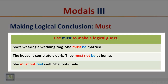'She must not feel well — she looks pale.' The modal auxiliary in these examples is used to make a logical guess. In the first example, we are almost sure that she is married because she is wearing a wedding ring.